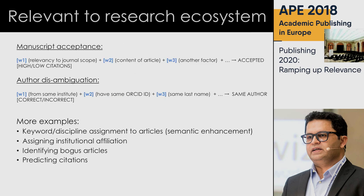Specifically talking about the research ecosystem — manuscript acceptance is one example. When a manuscript comes through a submission system, as an editor I look at the paper and say: is it relevant to the general scope? If not, I reject it on the first instance. Then I consider the content of the article and other factors. In the past, I have historical data about which articles I accepted that resulted in high or low citations. I can feed that data to AI to start predicting what is going to happen for a particular manuscript I receive today.